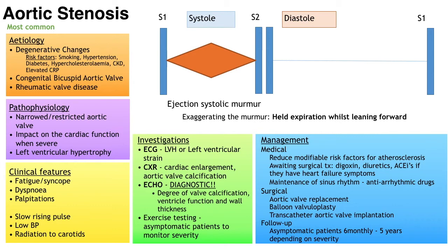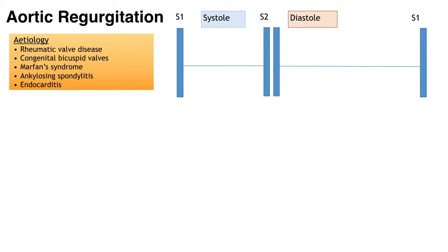At follow-up appointments they have a clinical examination and echocardiogram to assess symptoms and severity. This is unlike the stenotic valvular disease which can take many years to occur. Causes of aortic regurgitation include rheumatic valvular disease — the most common in developing countries — congenital bicuspid valves, aortic root dilatation occurring in Marfan syndrome and ankylosing spondylitis, and endocarditis which can cause rupture of the valve leaflets.